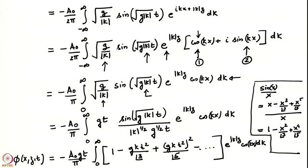We were looking at the solution to the Cauchy-Poisson problem for a delta function initial condition where the interface was perturbed with zero initial velocity, but with the displacement represented as a delta function at the origin. We had seen that we would write the equation for the velocity potential. The expression for the velocity potential contained a term of the form sin(x)/x. We expanded that in a Taylor series and then said we would integrate it term by term. Let us continue from there.